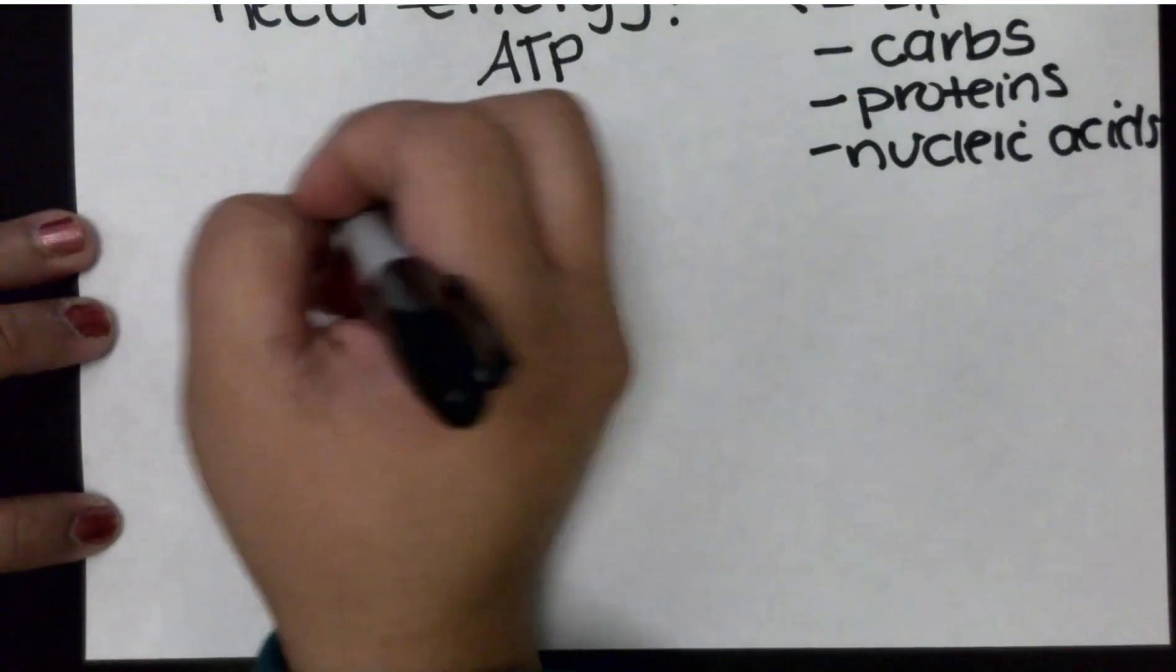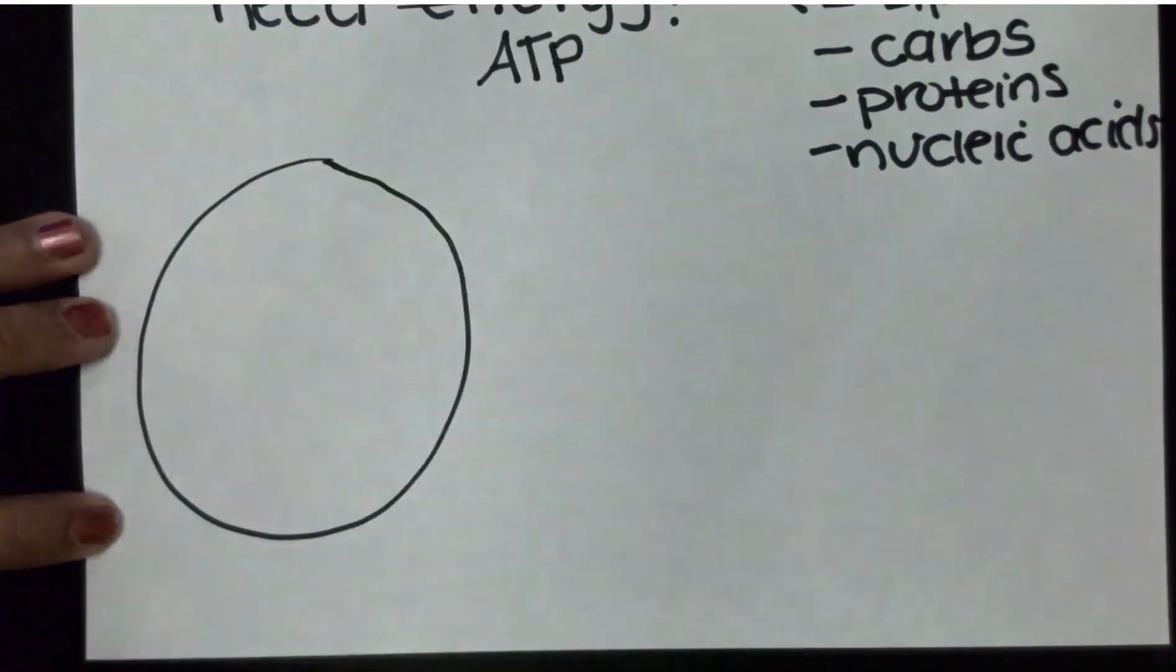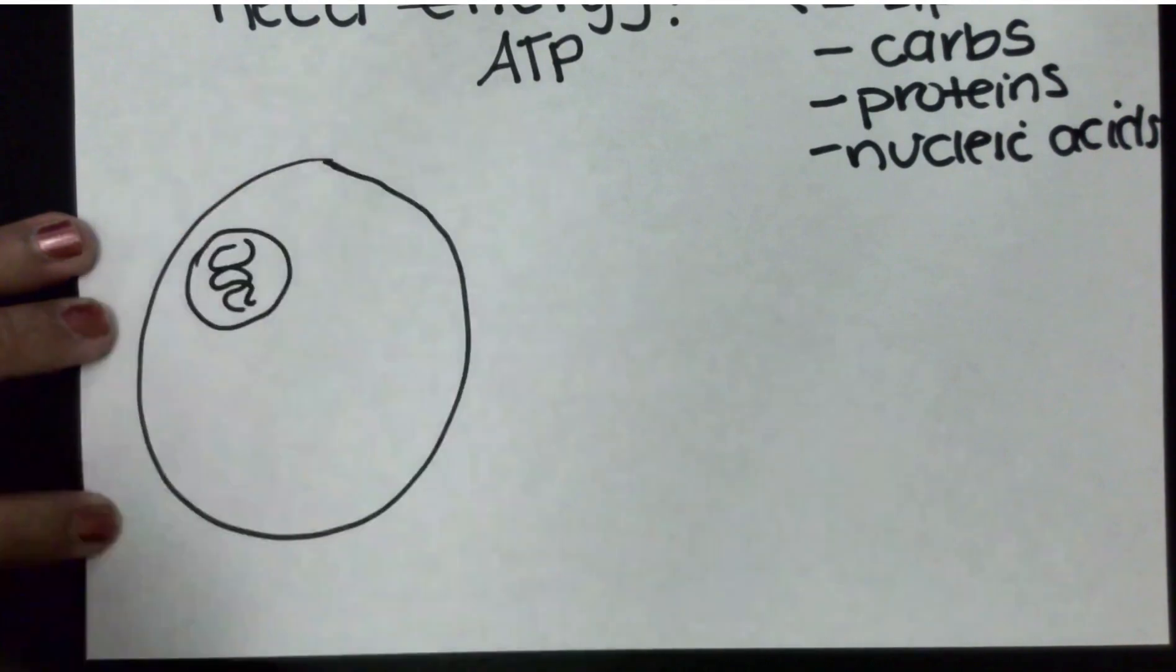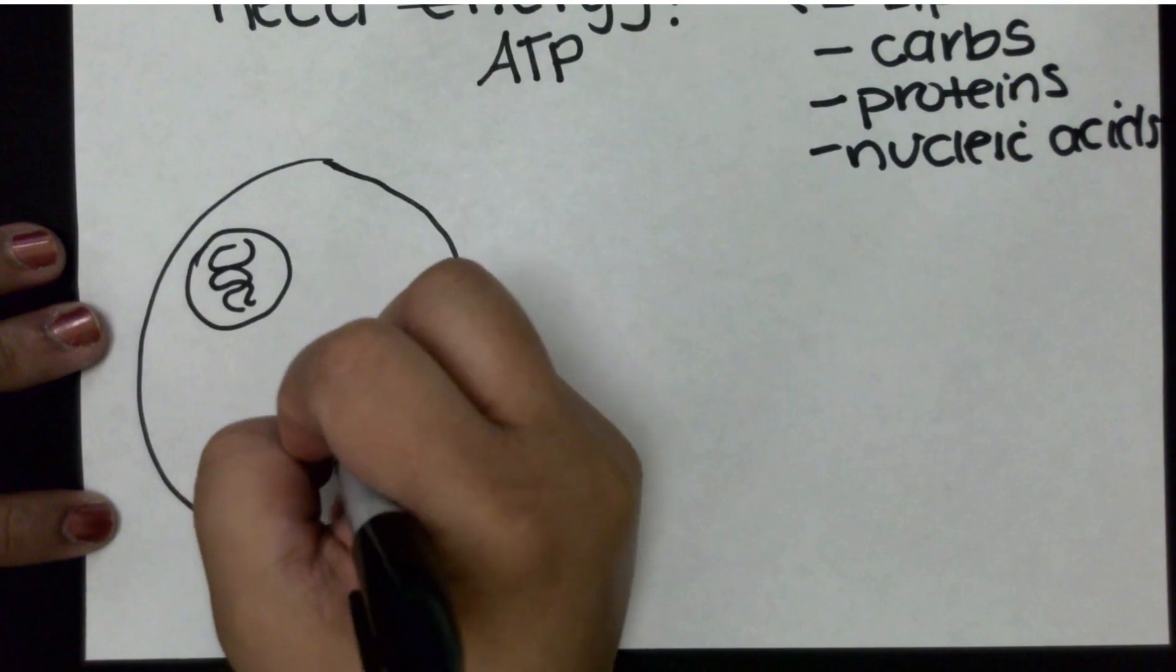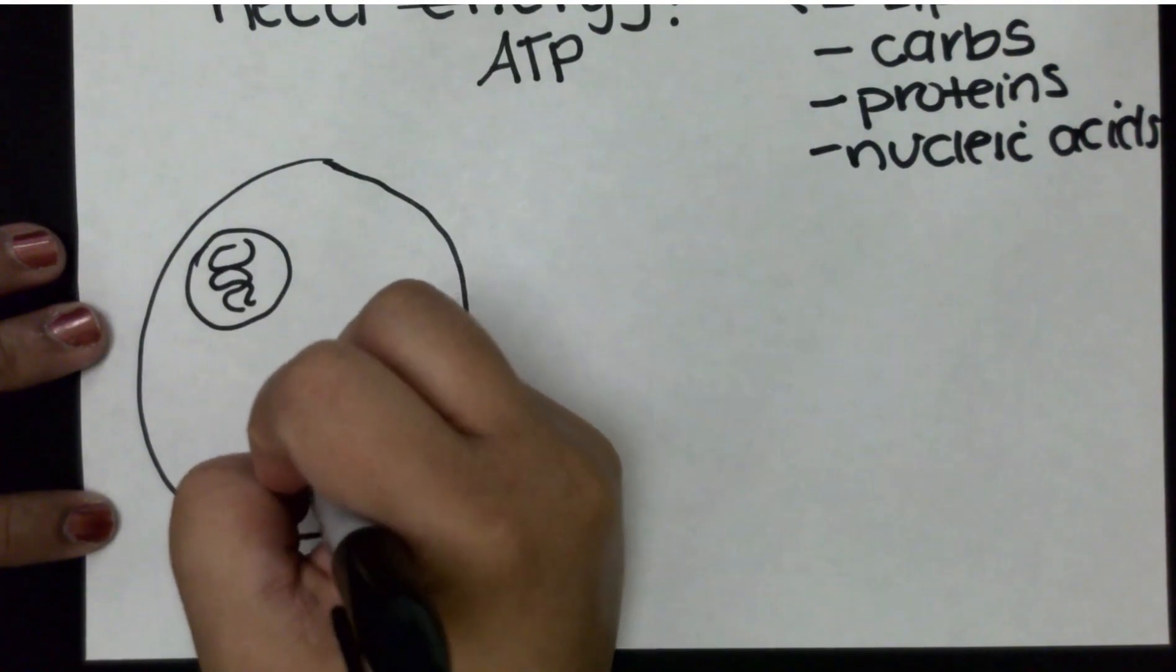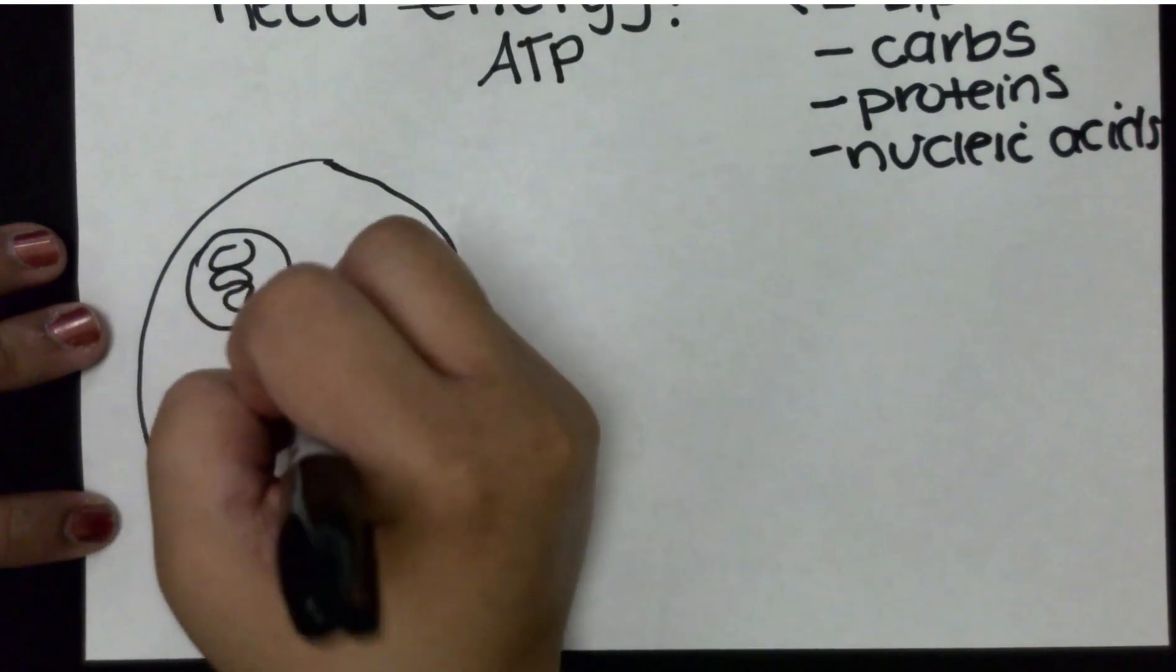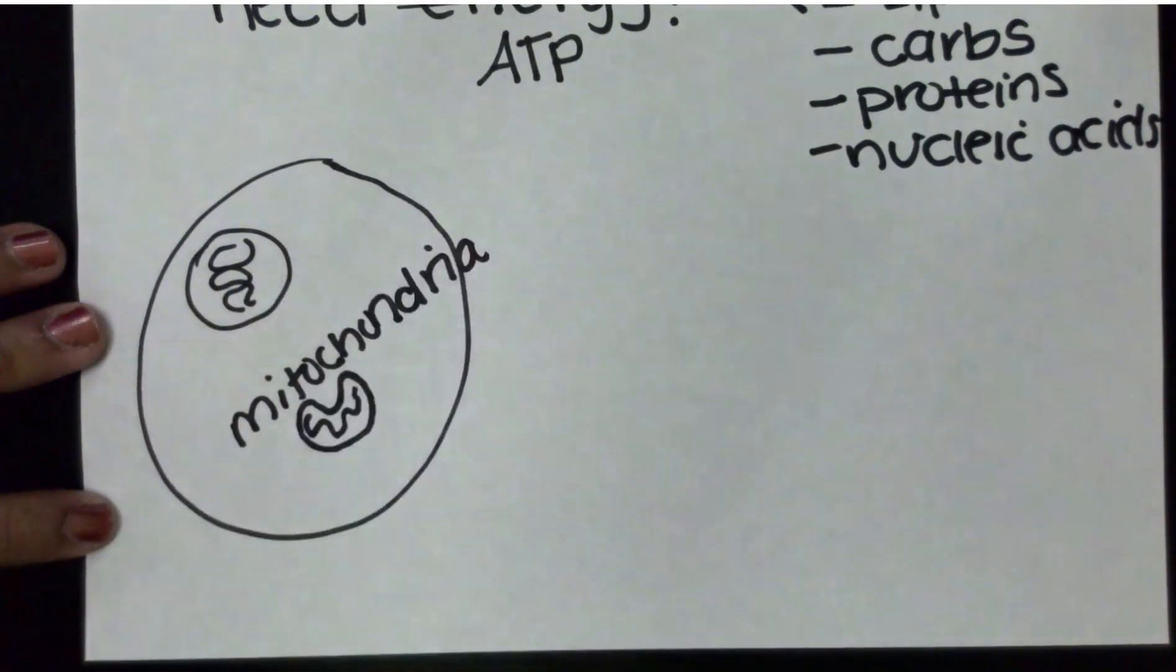I'm going to draw a cell. And inside our cell we have our nucleus with our DNA inside. But most importantly we also have our bean-shaped organelle called the mitochondria, which is the powerhouse of the cell, which is where ATP is created.